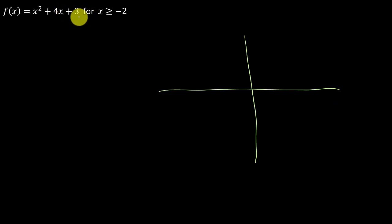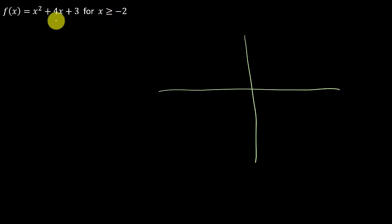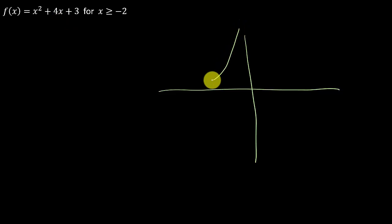I don't know what the y-coordinate of the vertex is, but that doesn't matter. I know the x-coordinate is going to be negative 2, so it's a parabola that opens like this. The vertex is somewhere — I don't know if it's above or below — but that's beside the point right now.